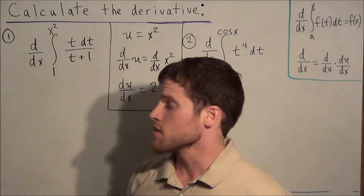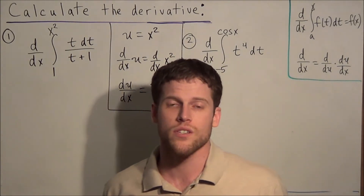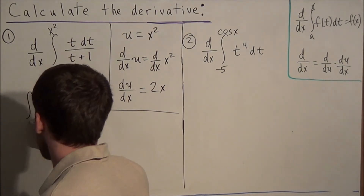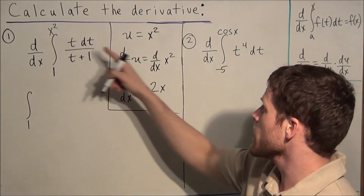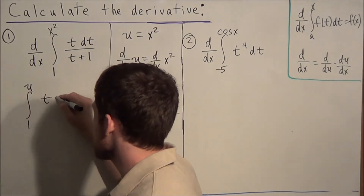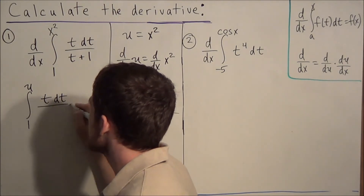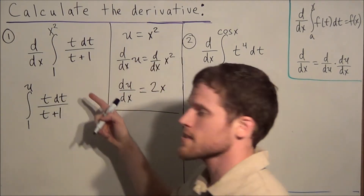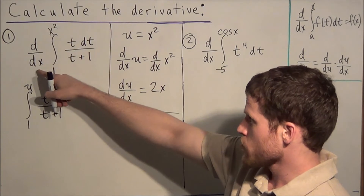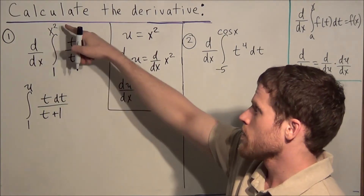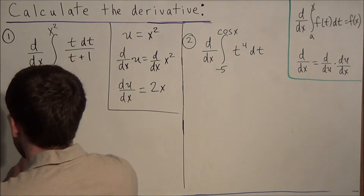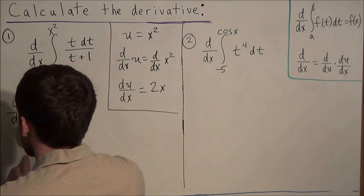Our next step is to rewrite this integral in a way that we can use the second fundamental theorem. For our new integral, it's going to go from 1, but instead of going up to x squared, we replace x squared with u. We rewrite t/(t+1) dt, and now we take d/du of this new integral since our variable is now u.